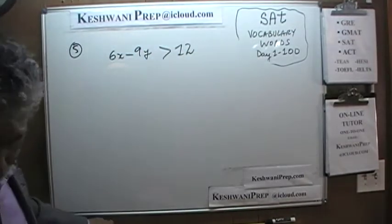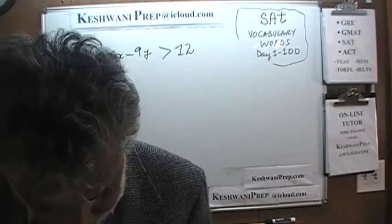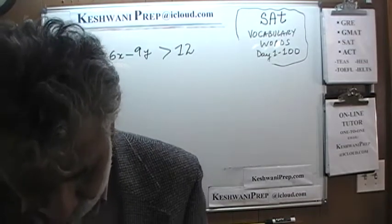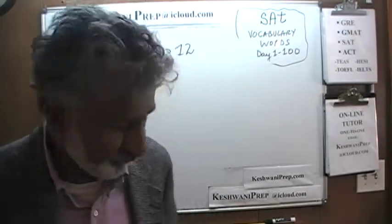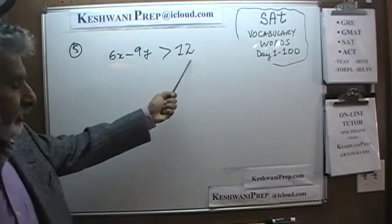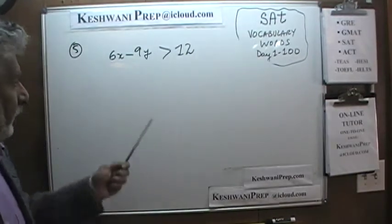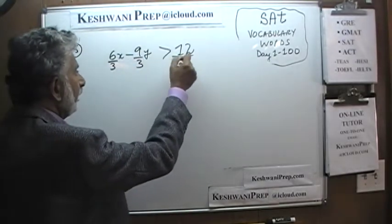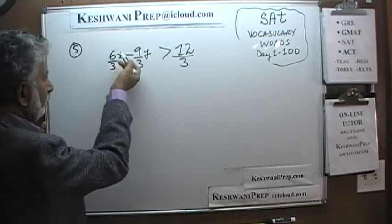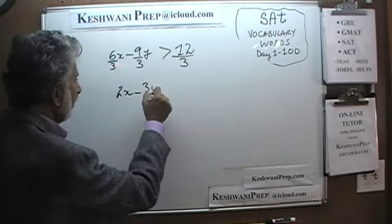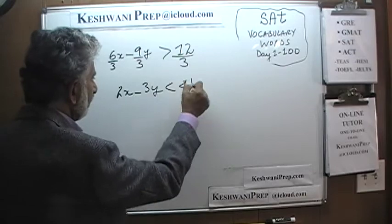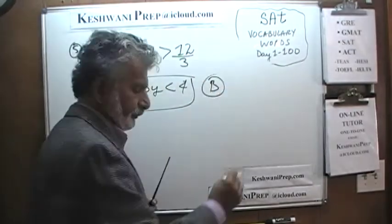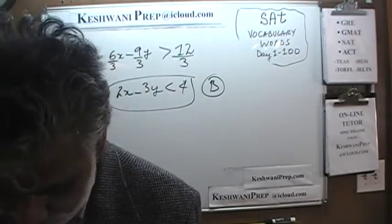Number 5: there's not much going on here because they're simply asking us to identify which of the following inequalities is equivalent to the one shown above. If you look at the answer choices, all they are doing is dividing the inequality by 3. If you divide the entire inequality by 3, 2·6x becomes 2x, this becomes 3y, and 12 stays as is. That's answer choice B — just divide the entire inequality by 3.